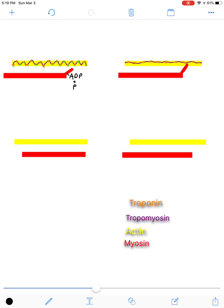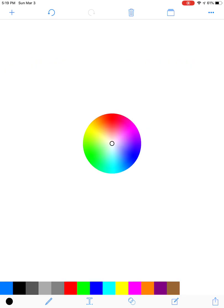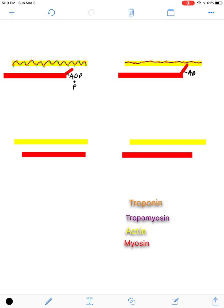Now all along, ADP is still there, and so is the phosphate. However, once that bond, that really strong bond between actin and myosin is formed, this phosphate gets flung off. And when that phosphate gets flung off, that is the trigger. That is the trigger for the power stroke. And the power stroke is muscle contraction.